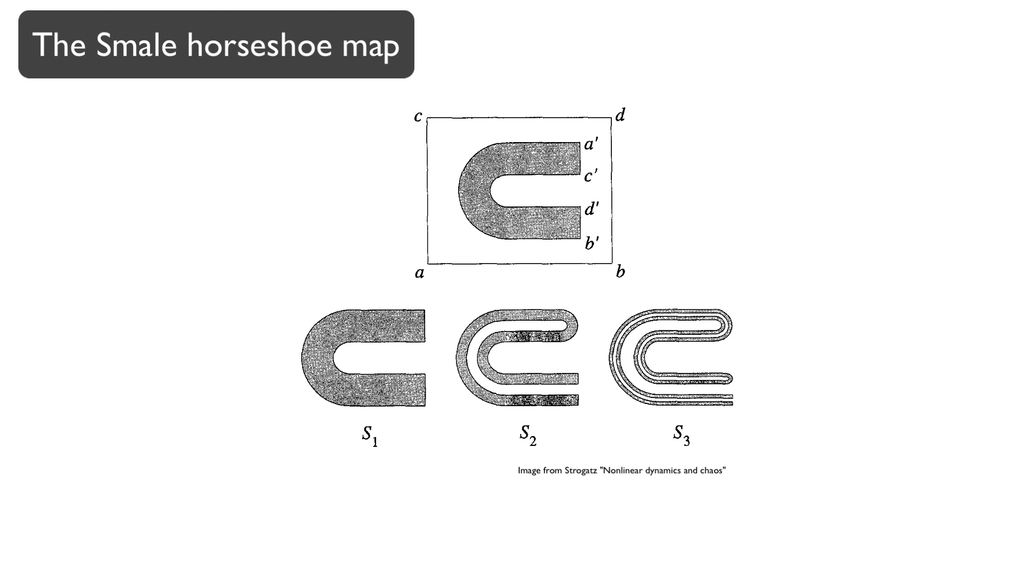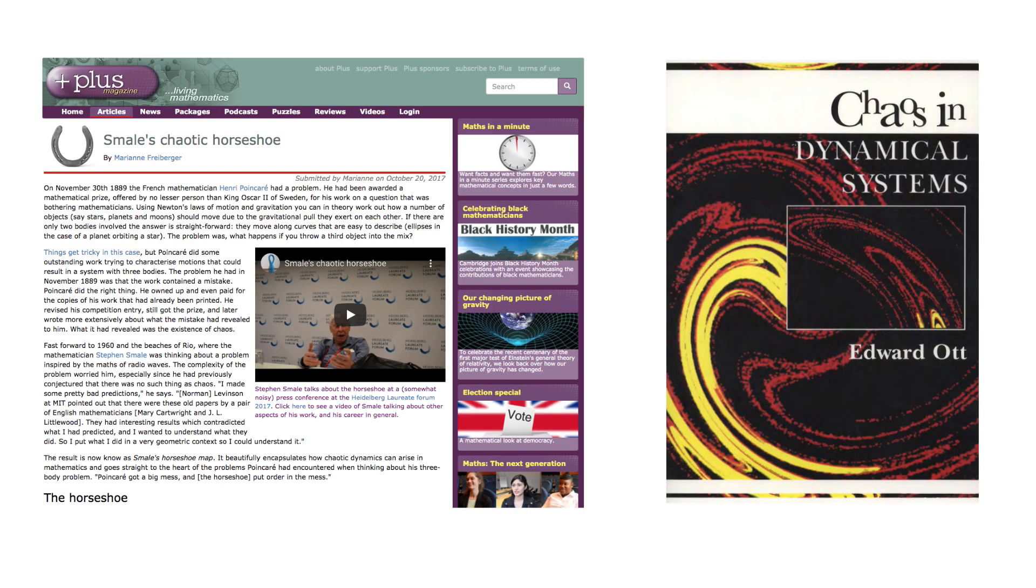In this video, I'll explain to you the basic idea of the map and the connections to some of the ideas we have learned in the course. Many of the images from this video are taken from the article from Cambridge's Plus magazine linked in the description. For a more polished examination, you can also refer to chapter 4 of Edward Ott's Chaos in Dynamical Systems book.